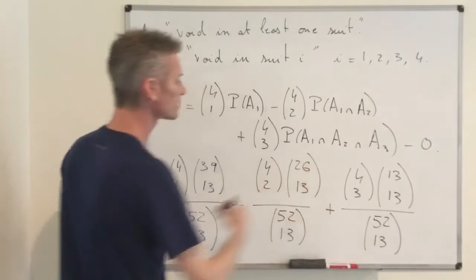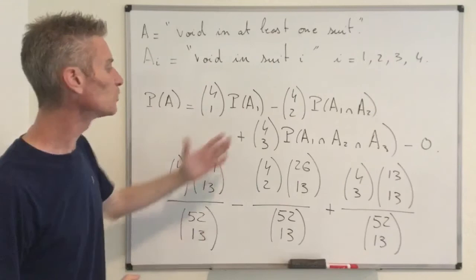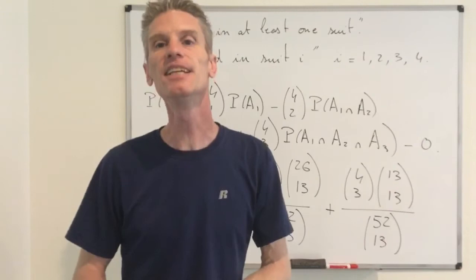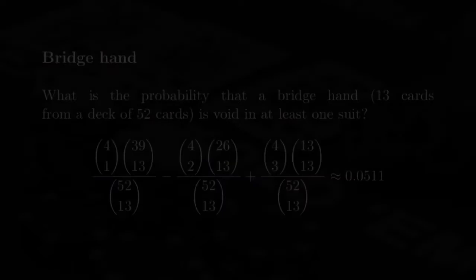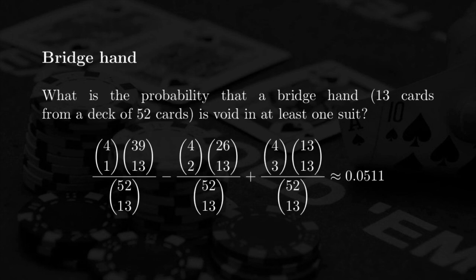So the full formula uses the plus-minus-plus pattern of inclusion-exclusion, simplified by symmetry. Computing numerically, the probability that a bridge hand is void in at least one suit is approximately 0.0511 — about 5% of the time when you play bridge, your hand will be void in at least one suit.